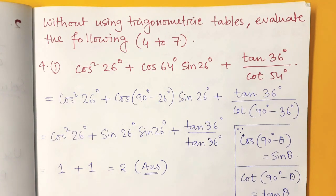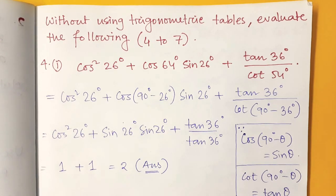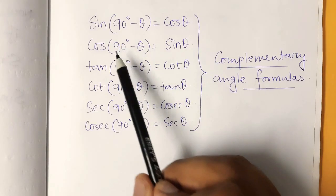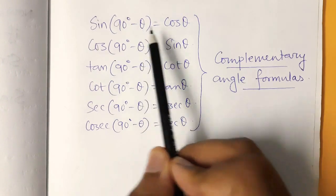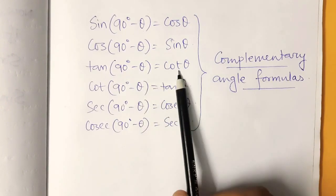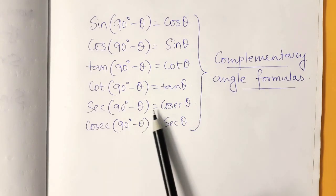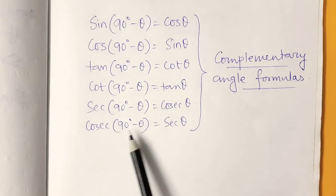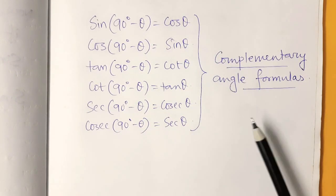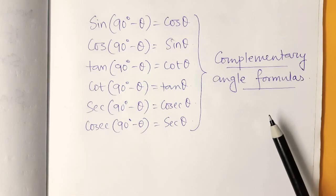From problem number 4 to 7, you cannot use trigonometric tables. You have to solve by complementary angle formulas, which are: sin(90° − θ) = cos θ, cos(90° − θ) = sin θ, tan(90° − θ) = cot θ, cot(90° − θ) = tan θ, sec(90° − θ) = cosec θ, and cosec(90° − θ) = sec θ. You have to remember these formulas. In this type of problem, always find two numbers that add up to 90°.